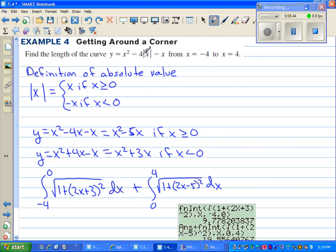In example 4, getting around a corner. We're going to find the length of the curve y equals x squared minus 4 absolute value of x minus x. Well, since the absolute value of x is involved in the problem, there's going to be a corner somewhere. And that's going to be a problem with the derivative, because derivatives don't exist at corners. Now the way we get around that, we're going to use the definition of absolute value.